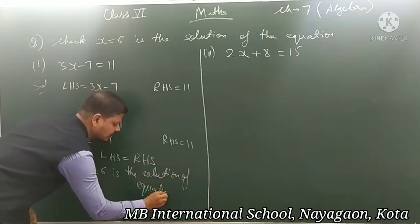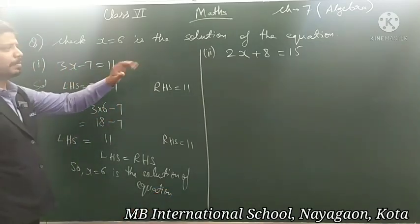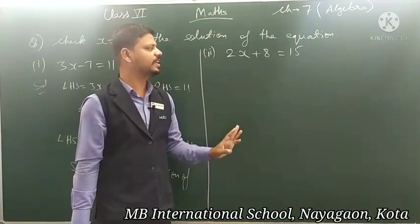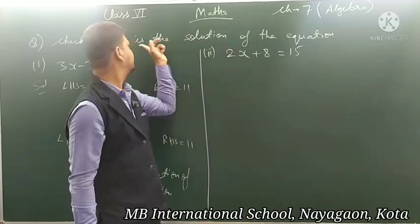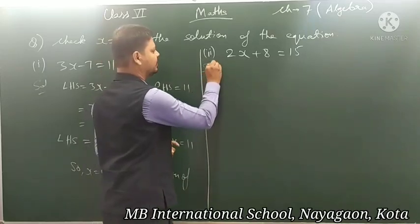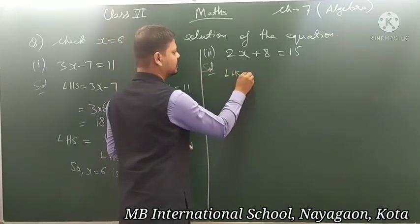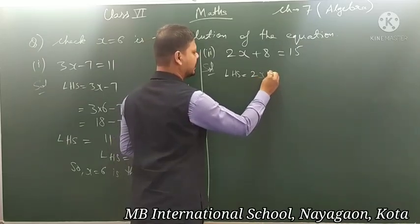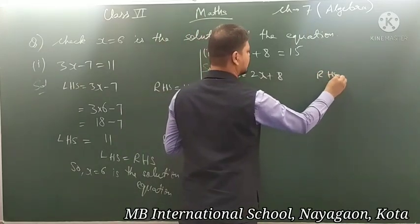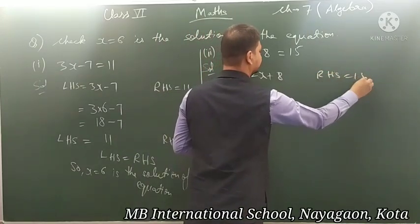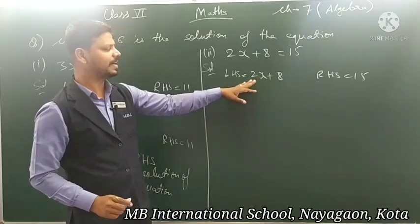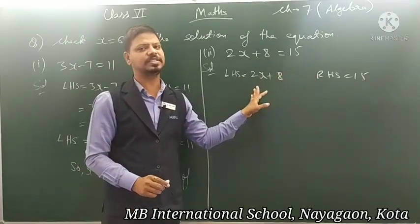Similarly, we will do the second example. The given equation is 2x plus 8 is equal to 15. Again, before putting x = 6, we divide it into two parts — LHS and RHS. The LHS, that is the left-hand side part, is 2x plus 8, and the RHS part is 15. If putting x = 6 gives LHS equal to RHS, it means x equals to 6 is the solution of this equation.